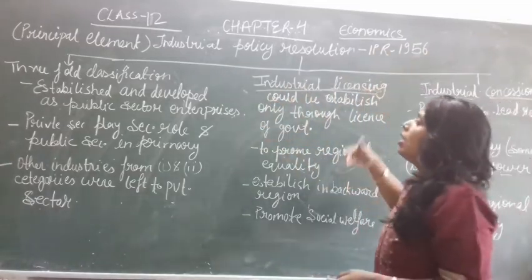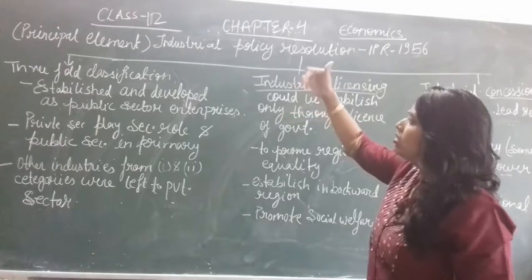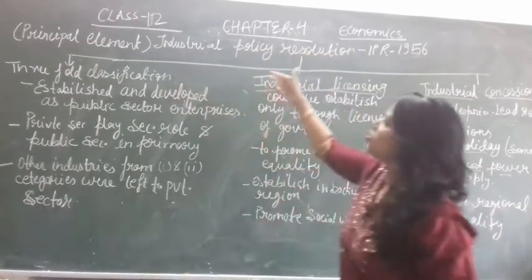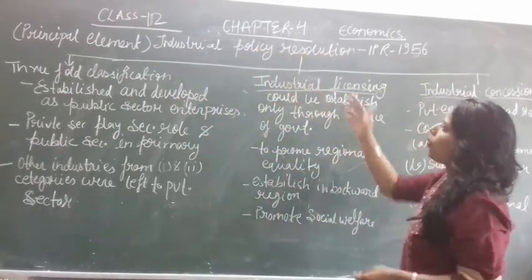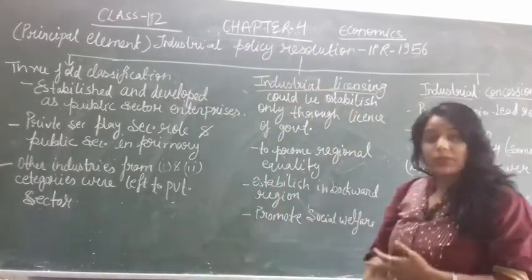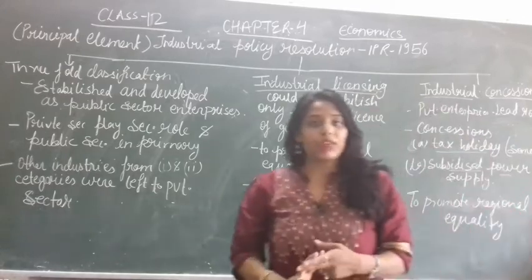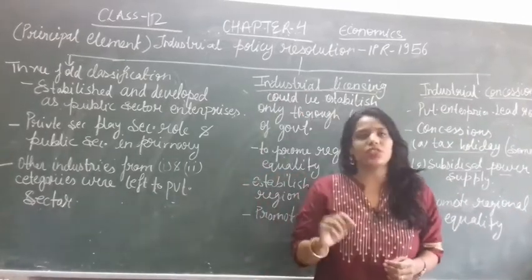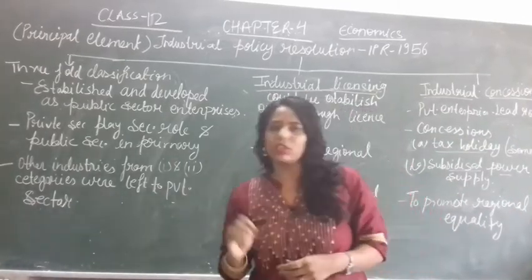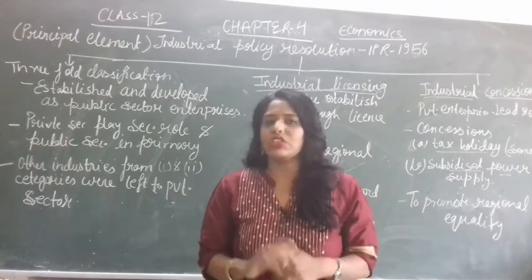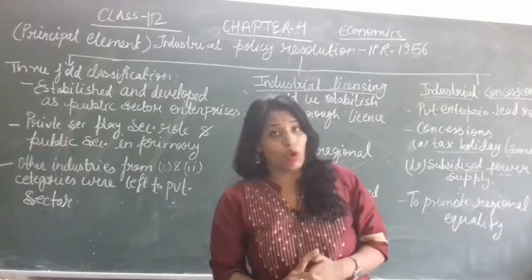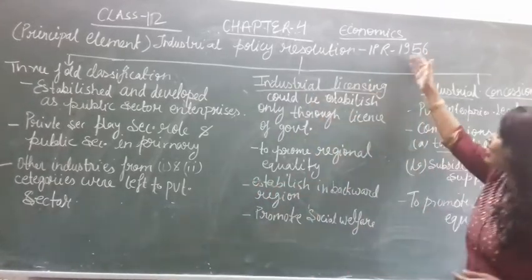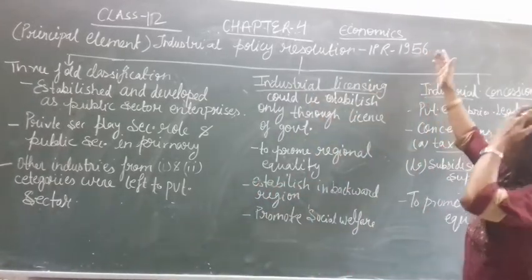This is the 4th topic of your book from the 4th chapter: Industrial Strategies. Here we cover the Principal Elements of the Industrial Policy Resolution. When the second five year plan came, there were resolutions of the Industrial Policy Resolution, and that was in the year 1956.